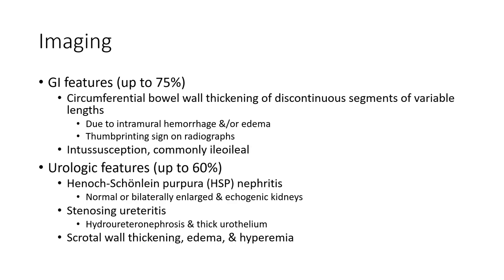Urologic imaging features are seen in up to 60% of patients. HSP nephritis appears as normal or bilaterally large and echogenic kidneys. Additional findings include urethritis, hydro-ureteronephrosis, thickened urothelium, bladder wall thickening, edema, and papillary changes.